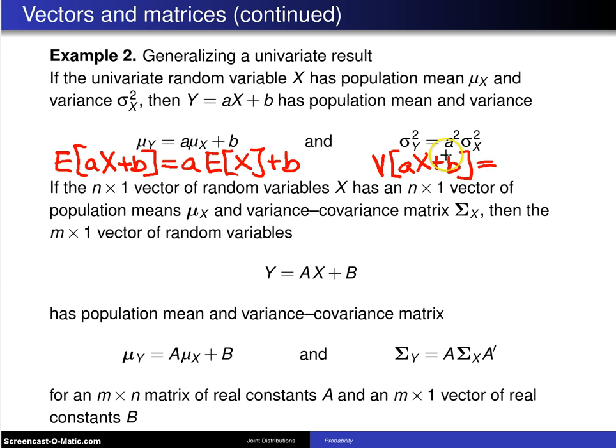Remember, for the variance operator, a shift is not relevant, so the a comes out squared, and you get a² times the variance of X.